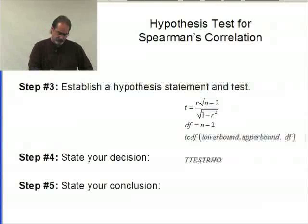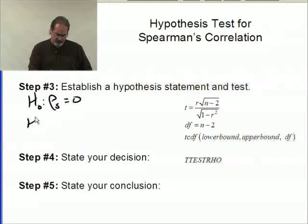The null hypothesis would be rho sub s equals 0, and the alternative hypothesis would be rho sub s is greater than 0. And again, I'm going to set alpha at 0.05.